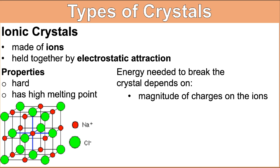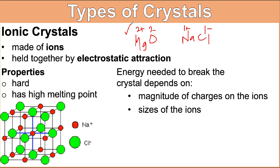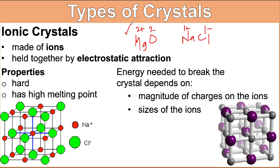The energy needed to break the crystal depends on: first, the magnitude of charges on the ions. For example, in MgO (magnesium oxide), you have 2+ and 2− charges, compared to NaCl where sodium has 1+ and chlorine has 1−. The plus-two and minus-two ions in MgO attract each other more strongly than the one-positive and one-negative ions in NaCl. The second factor is the size of the ions — attractions are less between the bigger ions in rubidium iodide, and as such, less heat energy is needed to separate them than the smaller ions in NaCl. Bigger size means less attraction.